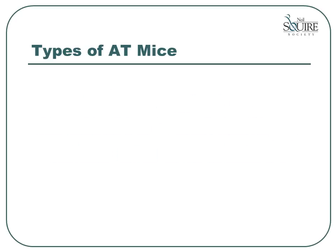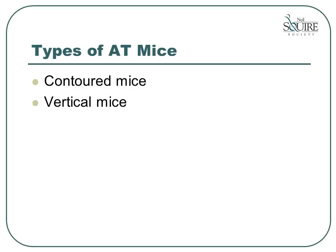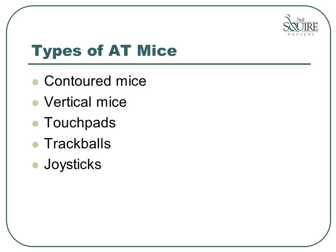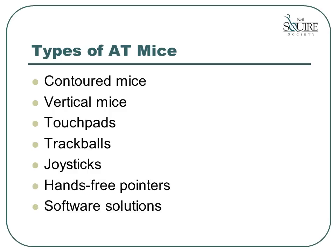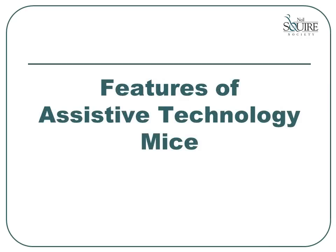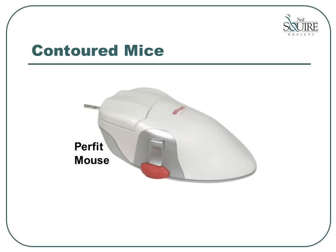Now let's take a look at what types of assistive technology mice are available. I have organized the various types into the following categories: contoured mice, vertical mice, touchpads, track balls, joysticks, hands-free pointers, and finally, software solutions. Next, let's cover some of the main features of these assistive technology mice. First, let's start with the contoured mice.